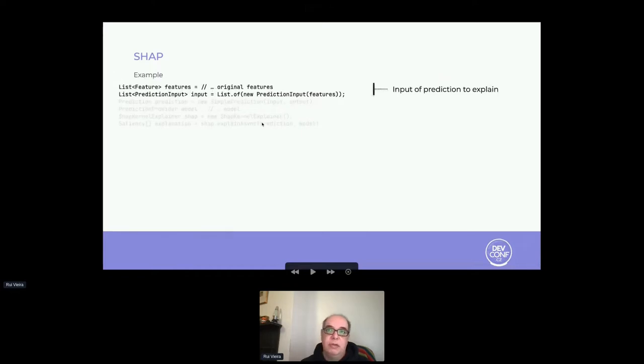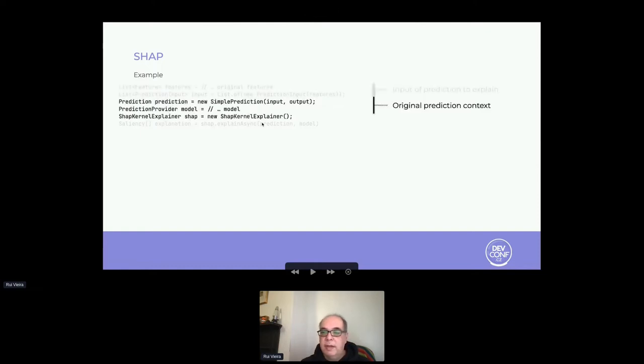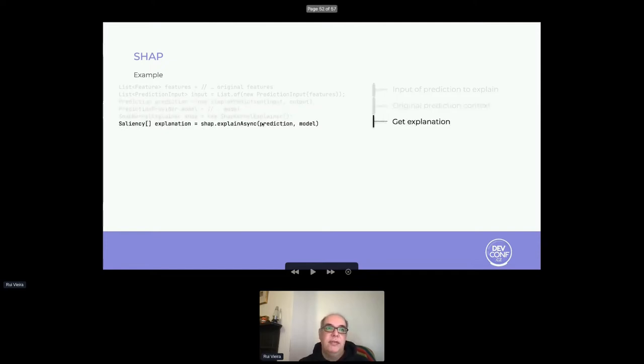Similarly to counterfactuals and LIME, we see that the SHAP application is quite straightforward in TrustyAI. We start by defining the original input as a list of features. We then give the explanation context, which is the original input and the output, and we associate the explainer. Then we request the explanation, which should be in the form of per-feature saliency, that includes a contribution of each feature to the output.